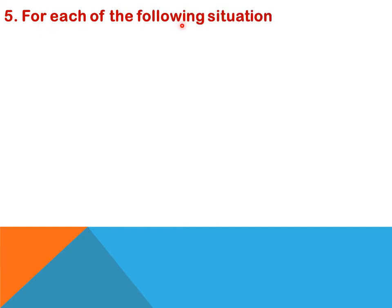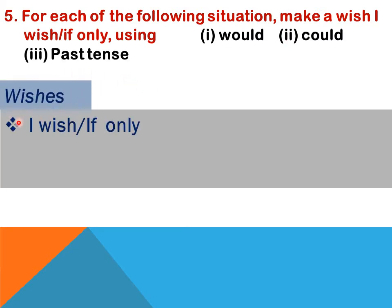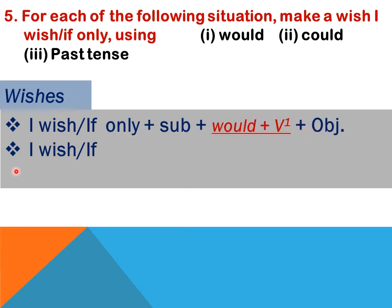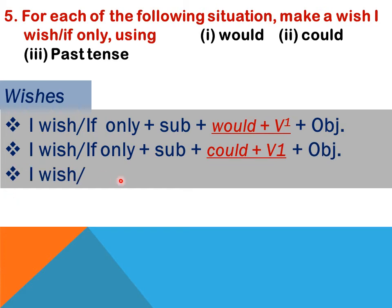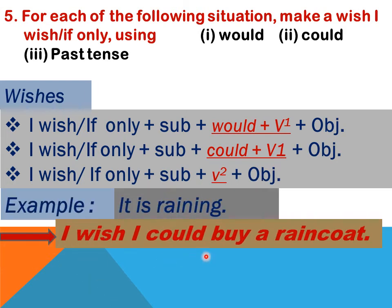Question 5: for each of the following situations, make a wish using 'I wish' or 'if only,' using: first — would + base form; second — could + base form; third — past tense. The structure is: 'I wish / if only + subject + would/could + verb1 + object' or 'I wish / if only + subject + verb2 + object.' Example: 'It is raining' — the answer is 'I wish I could buy a raincoat.'